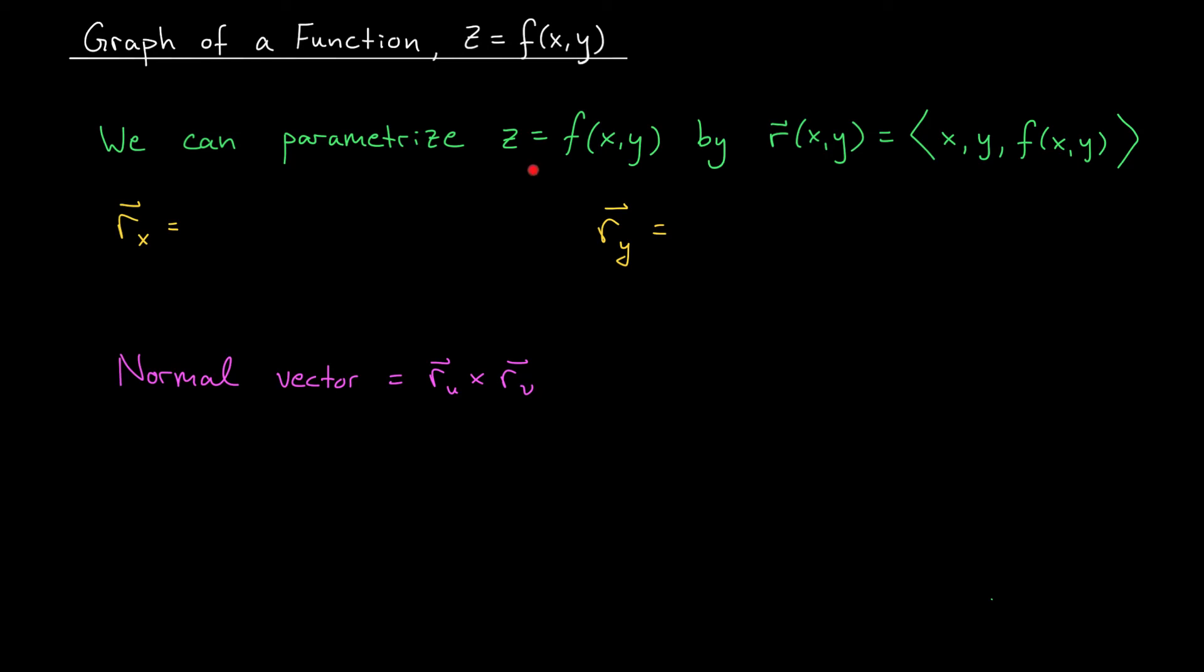Let me show you how we can simplify the process. If we're dealing with a function z equals f of xy, then we can parameterize it using this vector function, r of xy equals x, y, f of xy. That means that our tangent vectors rx and ry can be obtained by differentiating with respect to x and y. We get 1, 0, partial f by partial x, that's our first tangent vector. And for our second tangent vector, 0, 1, partial f by partial y.